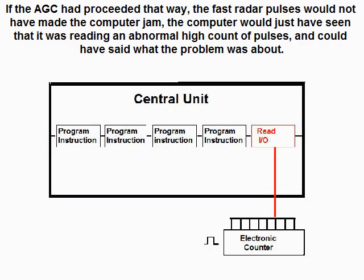If the AGC had proceeded that way, the fast radar pulses would not have made the computer jam. The computer would just have seen that it was reading an abnormally high count of pulses and could have identified what the problem was about.